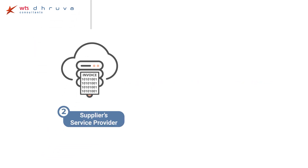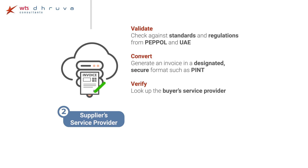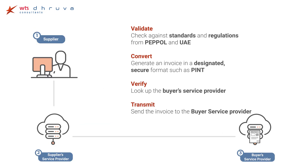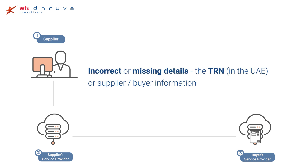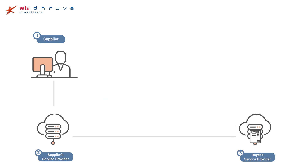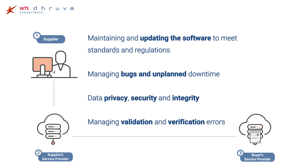Upon receiving the invoice, the service provider will validate, convert, verify, and transmit the data. This step is sensitive to data issues such as incorrect or missing details and duplicate invoices. These issues are best managed by establishing good processes and governance when raising invoices. Other important considerations, though largely handled by your service provider, include maintenance and updates, bugs and downtime, security, and handling exceptions.